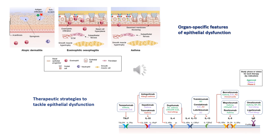Lastly, in asthma, goblet and basal cell hyperplasia with tissue remodeling occur, including basement membrane thickening, subepithelial fibrosis, and smooth muscle hypertrophy. Now we know that epithelial barrier alteration triggers the release of epithelial cytokines — TSLP (thymic stromal lymphopoietin) and interleukin-33 — that drive downstream cascades involving TH2 cytokines responsible for the signs and symptoms we observe in these patients. Altogether, this evidence is inspiring research on several biological therapies for allergic inflammatory diseases directly or indirectly targeting the skin, gut, and lung barrier.